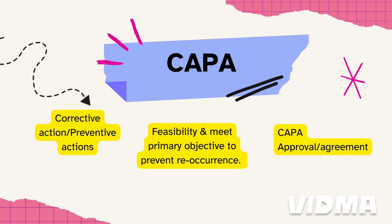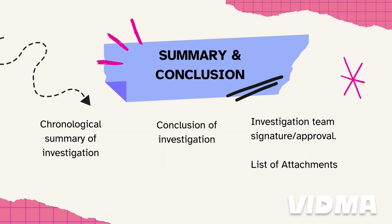Next is the CAPA — include the detailed CAPA findings in the investigation report. For the summary and conclusion, provide a concise and comprehensive summary of the investigation findings. This section is helpful for quickly understanding the investigation during audits or discussions.